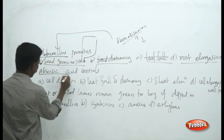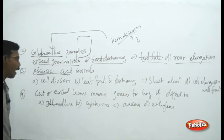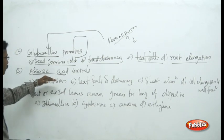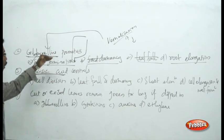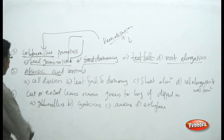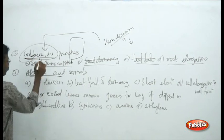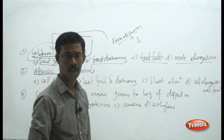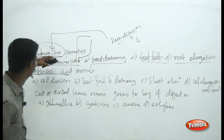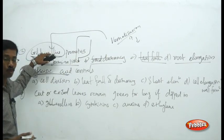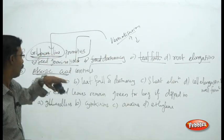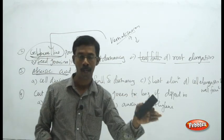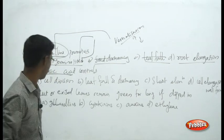The third question: abscisic acid controls. Just remember, abscisic acid is almost the opposite of gibberellins. Abscisic acid is on the inhibitor side of plant growth. Gibberellins belongs to plant growth promotion, while abscisic acid refers to plant growth inhibition.